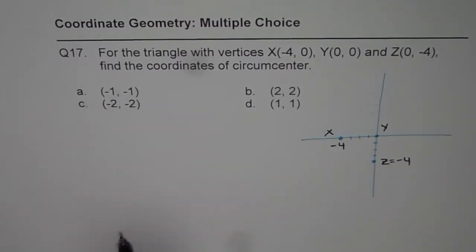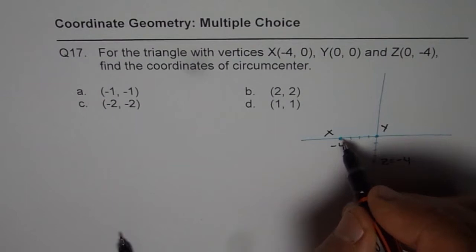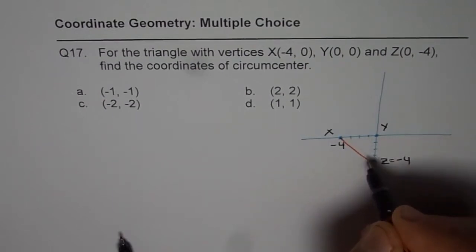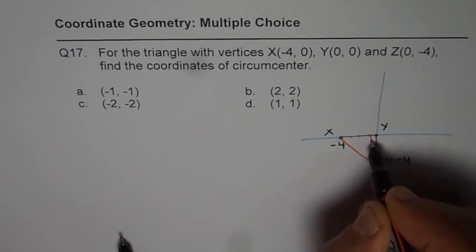We need to find points of the circumcenter. So how will you do it? So let's join these points and that forms a right triangle. So this is a right triangle.